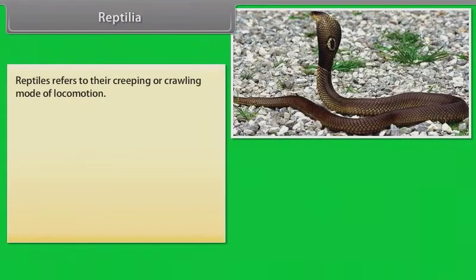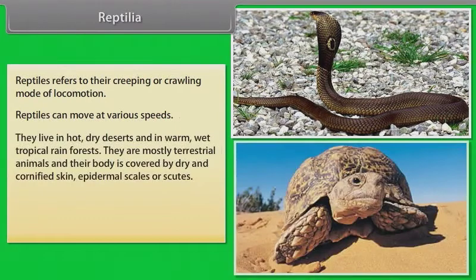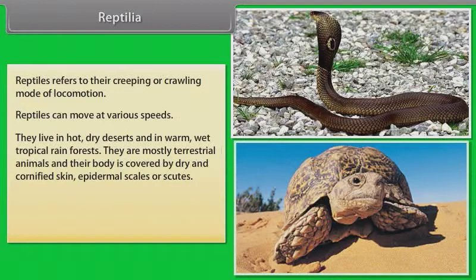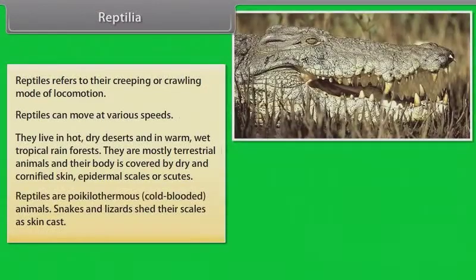Reptilia. Reptiles refer to their creeping or crawling mode of locomotion. Reptiles can move at various speeds. They live in hot dry deserts and in warm wet tropical rainforests. They are mostly terrestrial animals and their body is covered by dry and cornified skin, epidermal scales or scutes. Reptiles are poikilothermous, or cold-blooded animals.